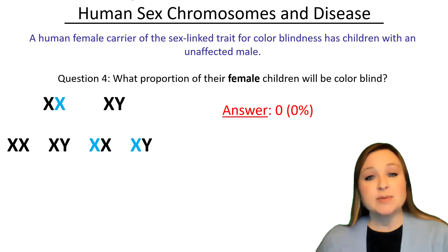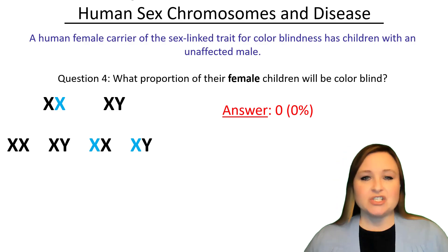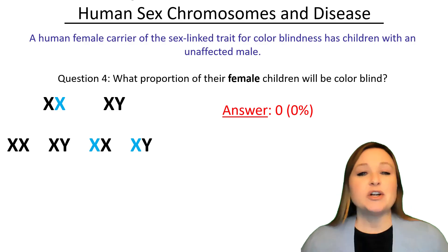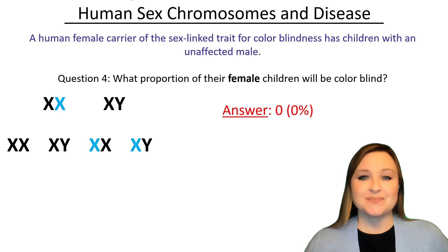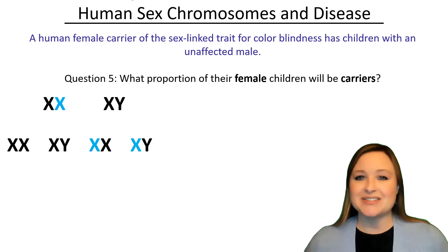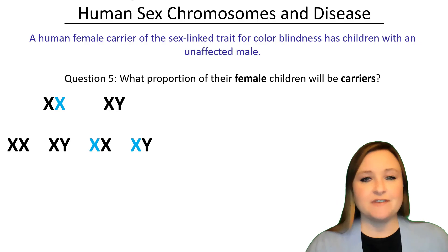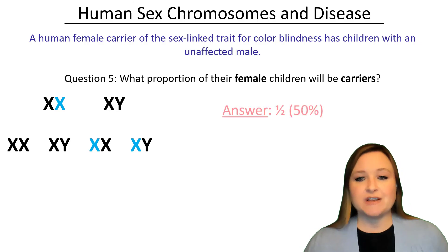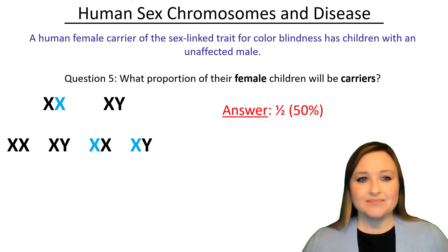In this scenario, we have the option of a female who did not receive the colorblindness gene, and a female who received one copy and is a carrier. If you want extra practice, you can try to figure out the genetics of the parents where it would be possible for a female offspring to be colorblind. Question five: what proportion of their female children will be carriers? When we look at the females specifically, 50% do not have the colorblindness trait and 50% are carriers. So the answer is one out of two — one half, or 50%.